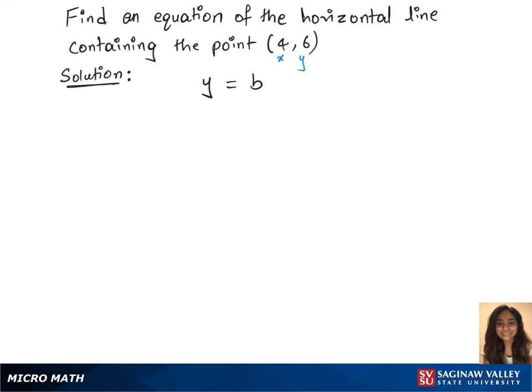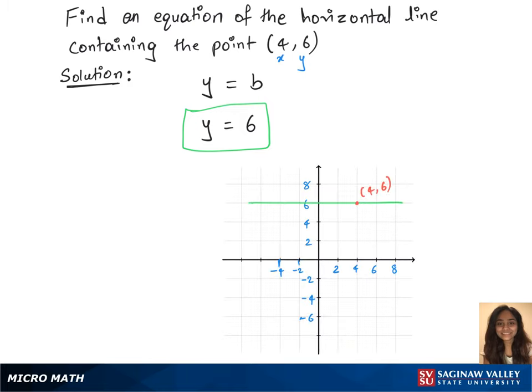Let's write the equation as y equals 6. So this is the equation of the horizontal line. And we have the graph for this, which is a straight line parallel to the x-axis.